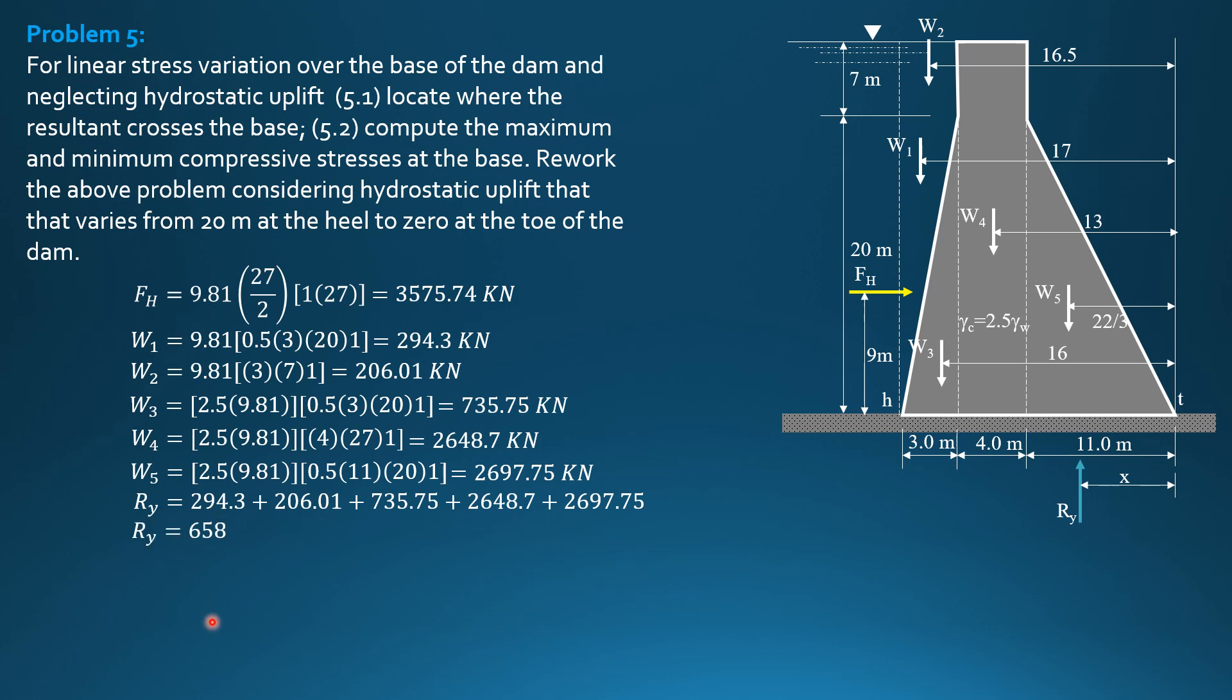So R-Y is 294.3 plus 206.01 plus 735.75 plus 2648.7 plus 2697.75. So R-Y is equal to 6582.51 kilonewtons. And to solve for X, we sum up moment about the toe equals 0. So 6582.51 times X plus F-H 3575.74 times 9. Then equals weight 1, 294.3 times 17 plus weight 2, 206.01 times 16.5 plus weight 3, 735.75 times 16.